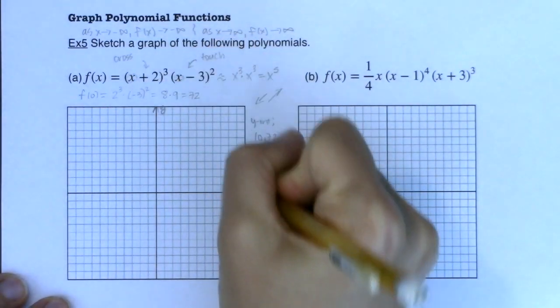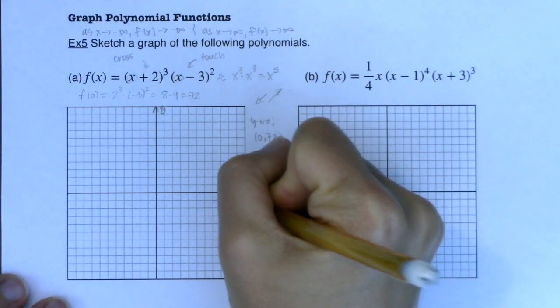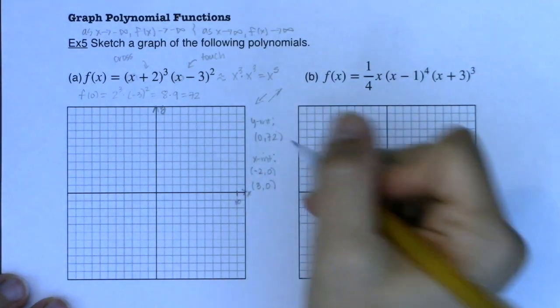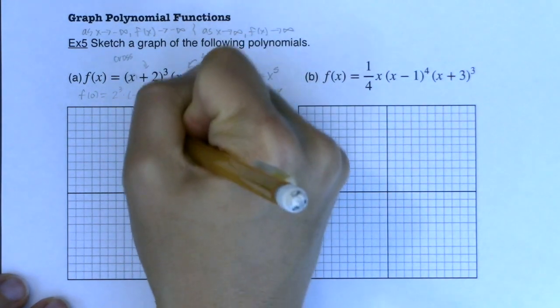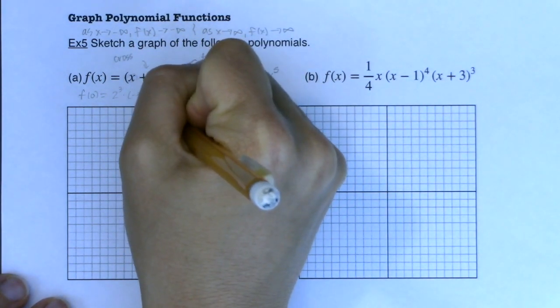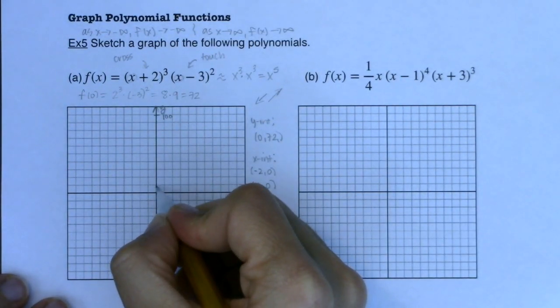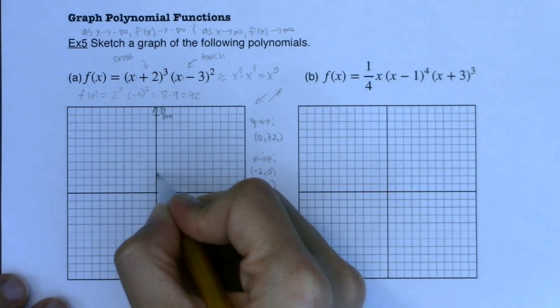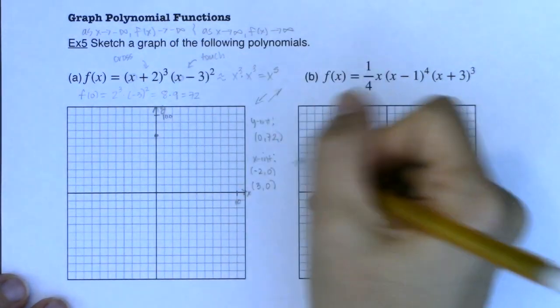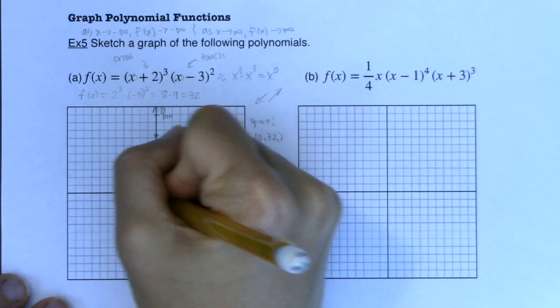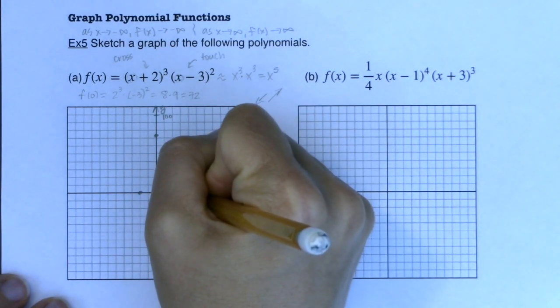If you remember, we could write this. You could say as x goes to negative infinity, f of x goes to negative infinity, and then as x goes to positive infinity, f of x goes to positive infinity. You're more than welcome to use that infinity notation. It's great to get used to it because you will see it in a calculus class. But I told you I'm going to lazy out, and there are my arrows.